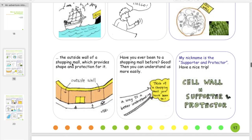So here it says the outside wall of a shopping mall which provides shape and protection for it. So under outside wall on your table on your worksheet you can say it provides shape and protection for a mall. A cell wall is a supporter and provides protection for a cell. I don't need you to fill up the whole box totally. Just write down the quick functions of these different things. I think comparing a cell to a mall is a great way for you to visualize and better understand what all these different pieces do.